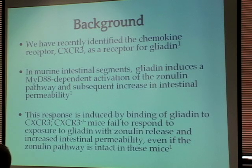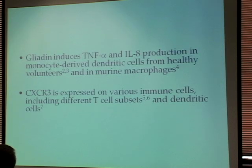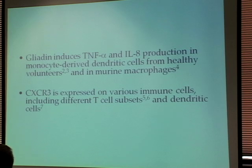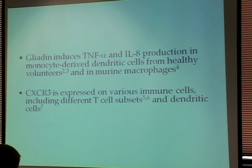We confirmed this by looking at CXCR3-positive or CXCR3-negative mice. CXCR3-negative mice fail to respond to exposure to gliadin with zonulin release and further intestinal permeability. It has also been reported that gliadin leads to an increase in cytokines like TNF-alpha, tumor necrosis factor alpha, as well as IL-8, interleukin-8. They are both reported as chemotactic for T lymphocytes — that is, they recruit T lymphocytes to the site of infection — in undifferentiated monocytes as well as dendritic cells and macrophages.